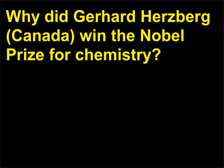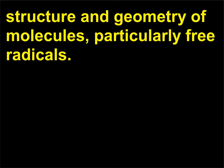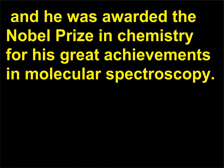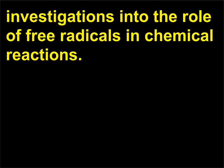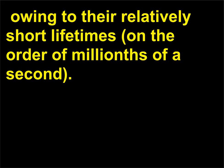For his contributions to the knowledge of electronic structure and geometry of molecules, particularly free radicals. Herzberg was a famous physicist and astrophysicist, and he was awarded the Nobel Prize in Chemistry for his great achievements in molecular spectroscopy. A particular demonstration of his skill in spectroscopy was his investigations into the role of free radicals in chemical reactions. Free radicals had long been a difficult target to study, owing to their relatively short lifetimes on the order of millionths of a second. Herzberg's talent with spectroscopy allowed him to address this and other similarly challenging and interesting problems.